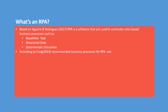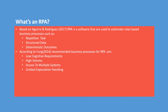According to Fung, recommended business processes for RPA are: low cognitive requirements, high volume, access to multiple systems, limited exception handling, and tasks that are prone to human error.